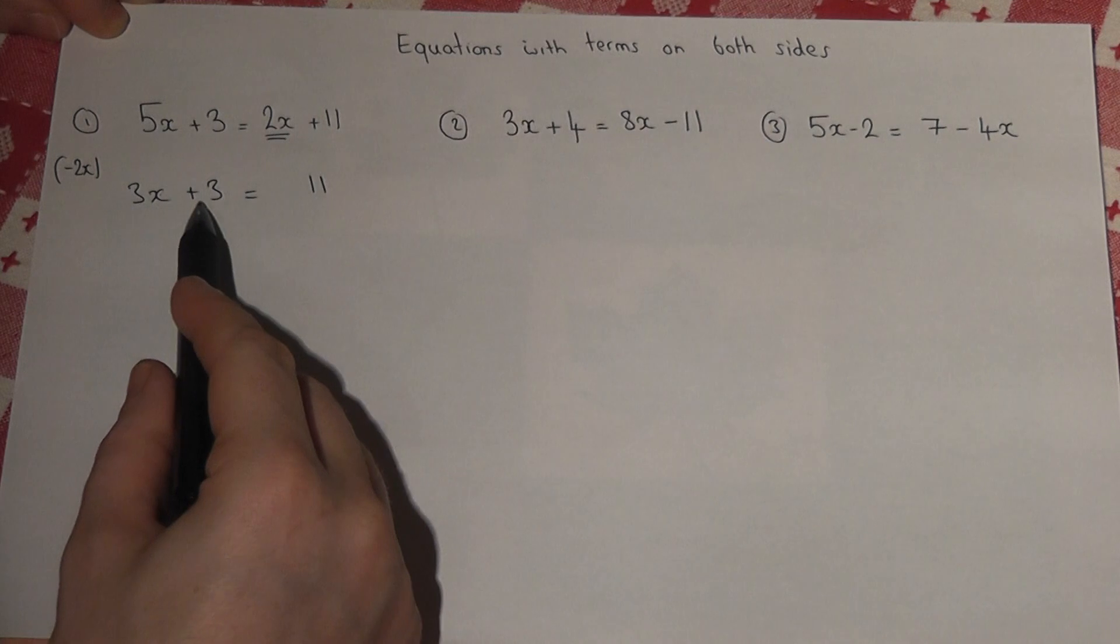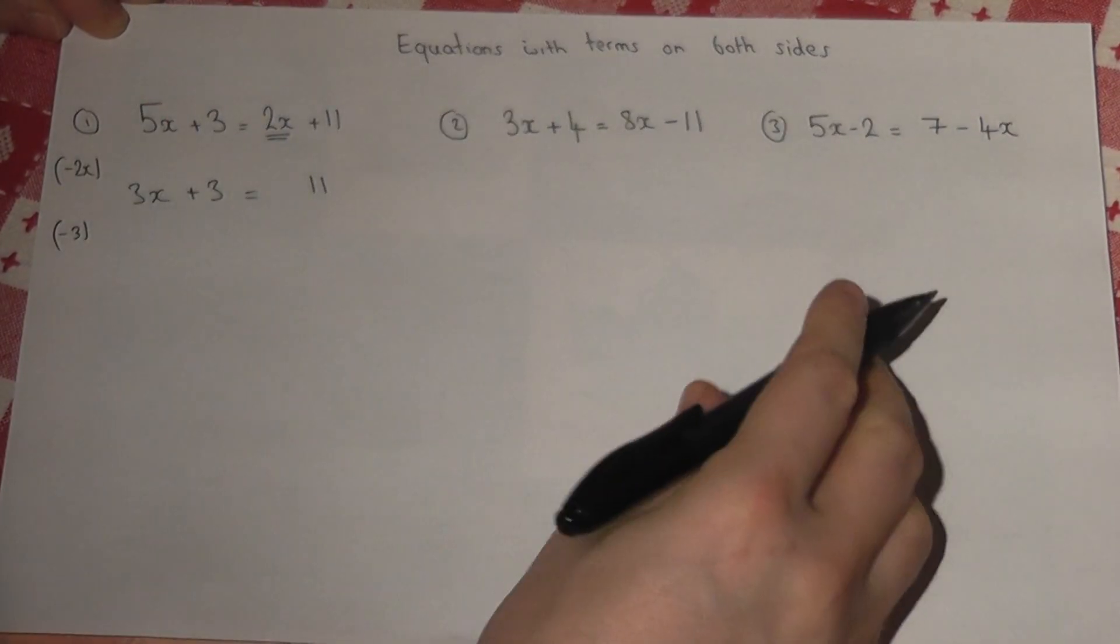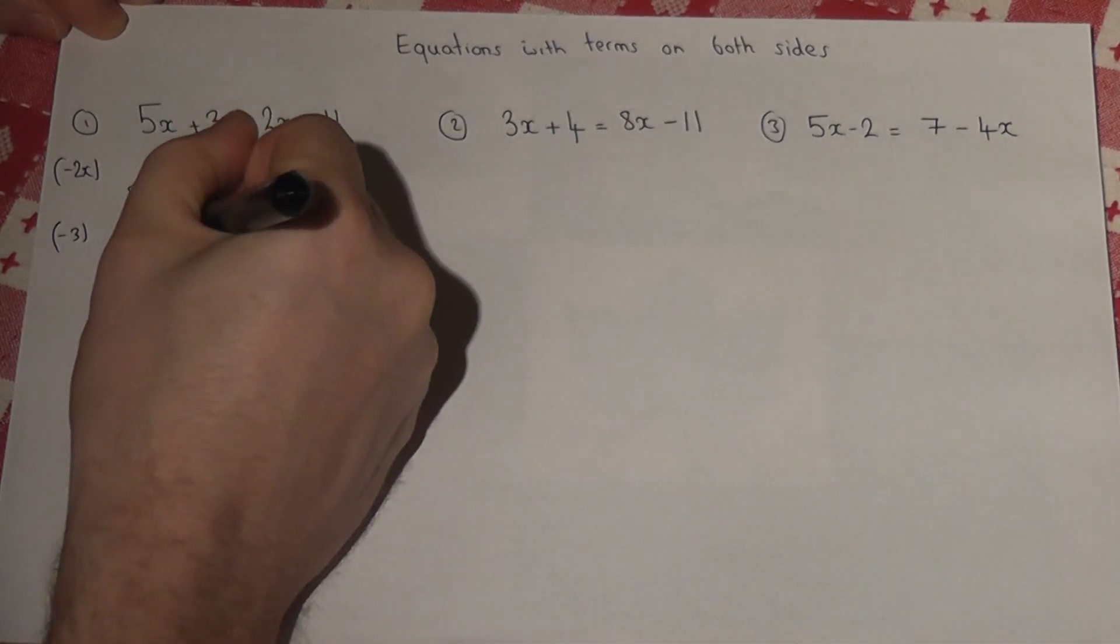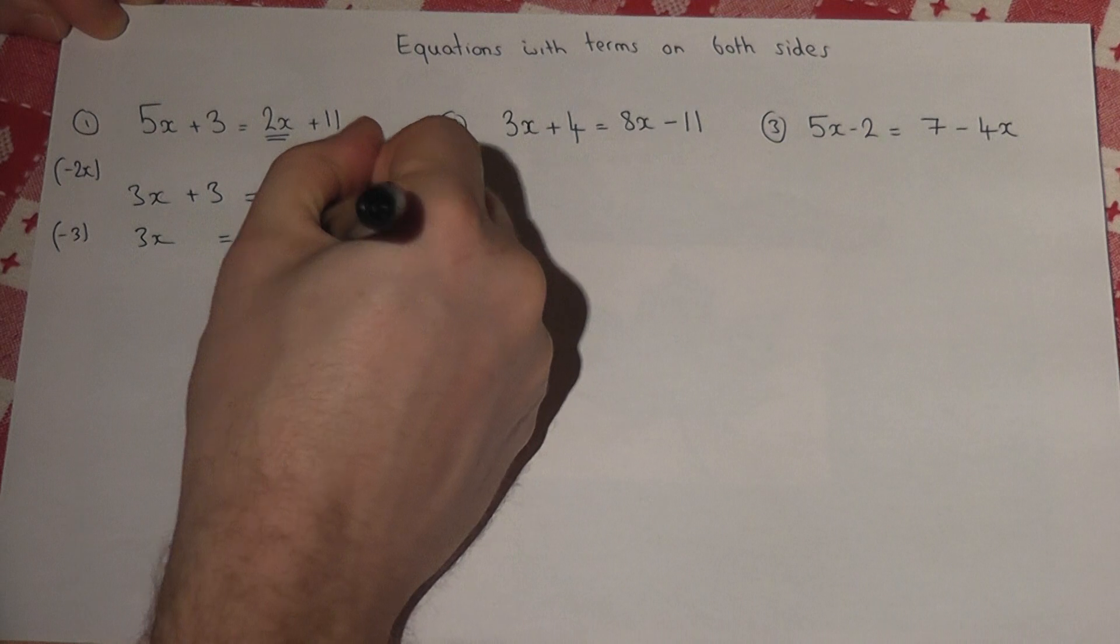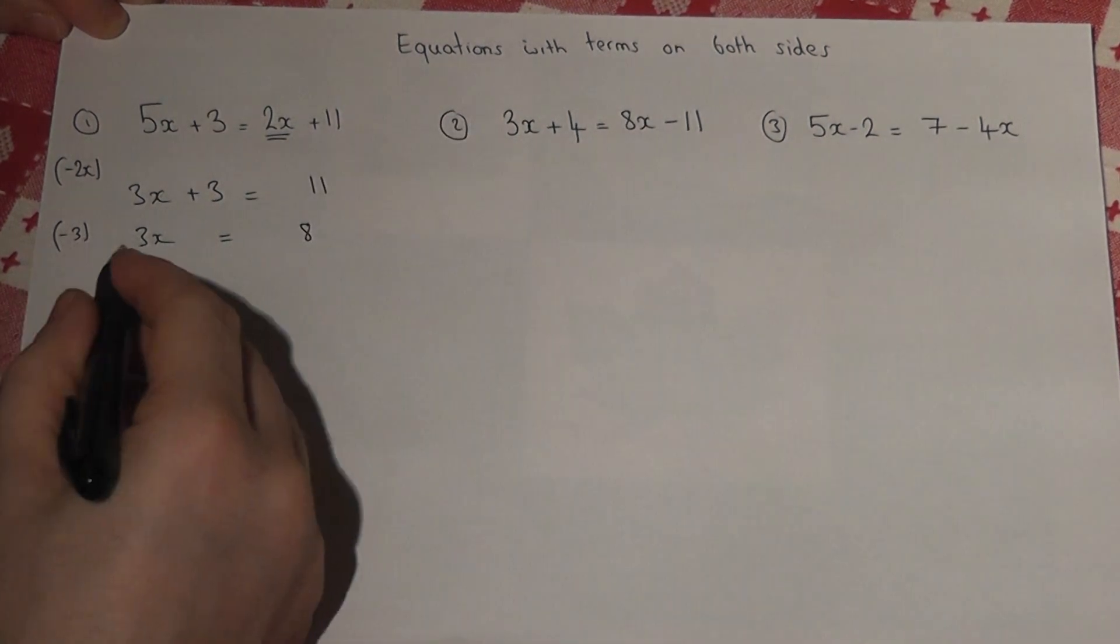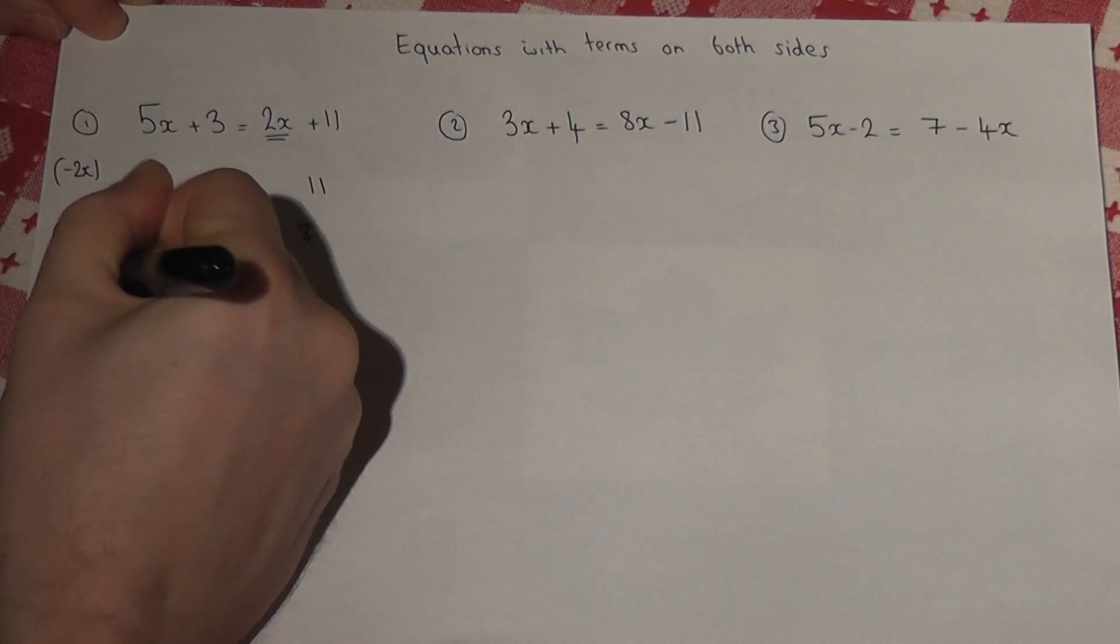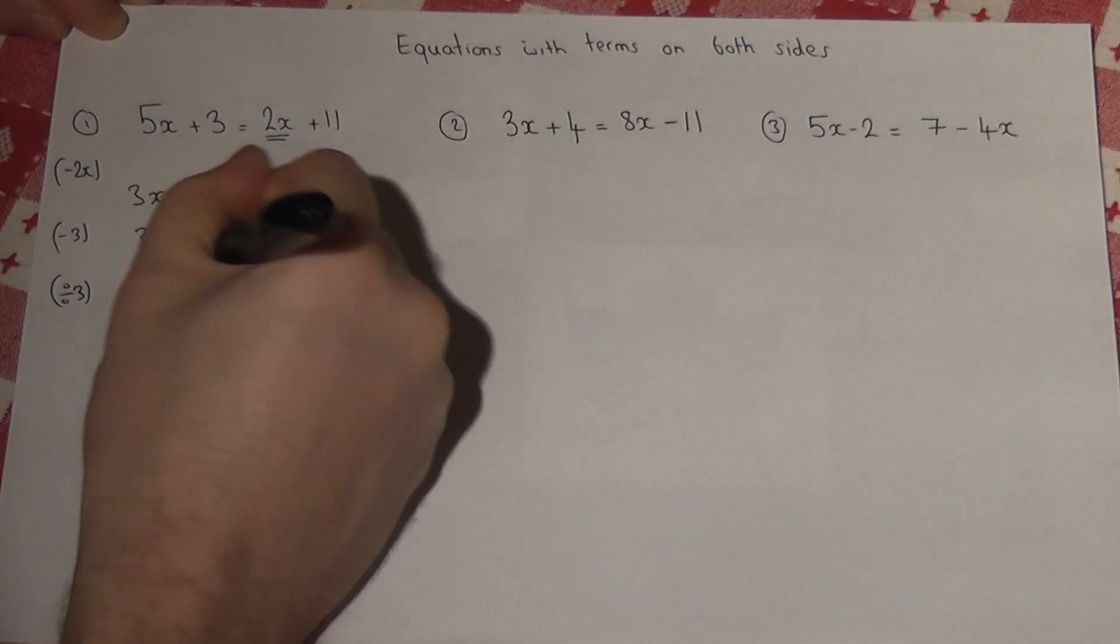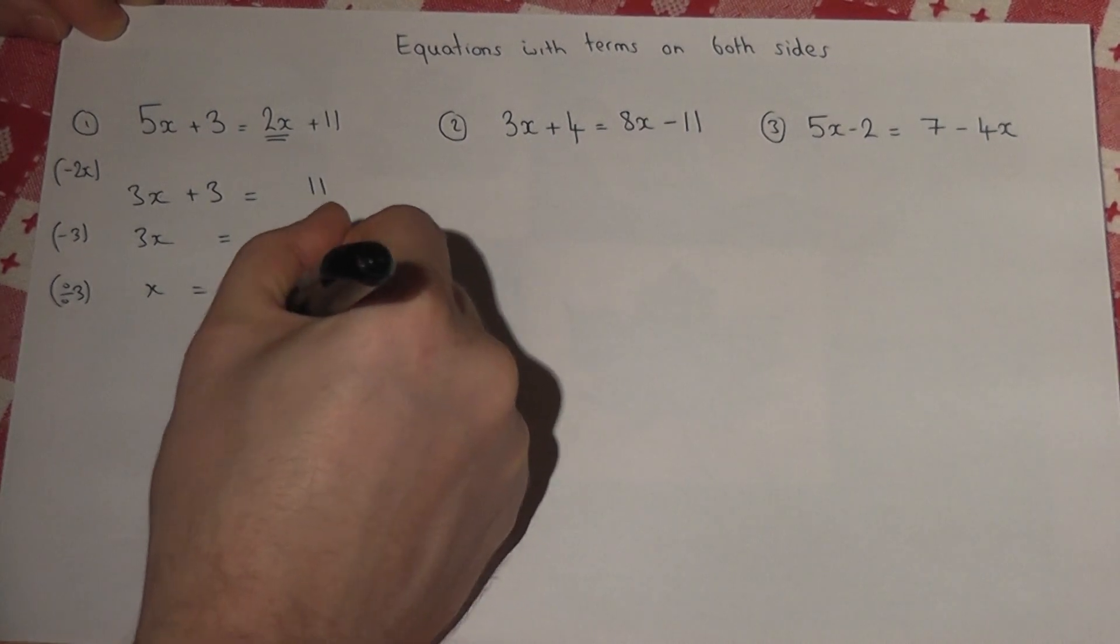I now remove the 3 here by taking it away. So 3x equals 11 take away 3 which is 8. I then divide by the 3 here, the coefficient. So x equals 8 over 3, a fraction.